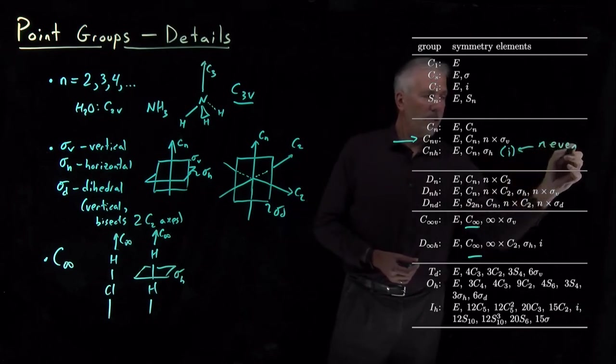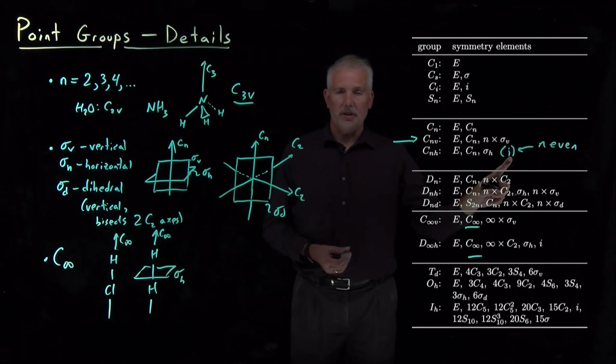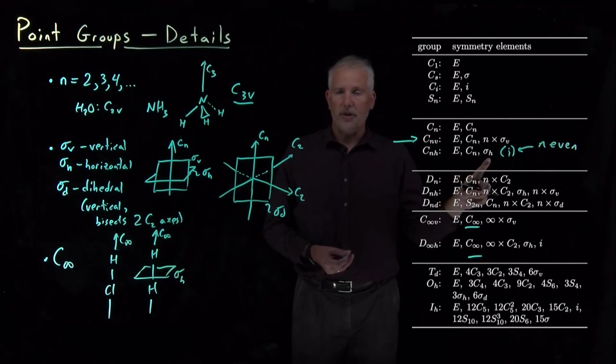If the N value is an even number, then there will be an inversion center. A C3H on the other hand just has identity, a C3 axis, and a horizontal reflection plane.